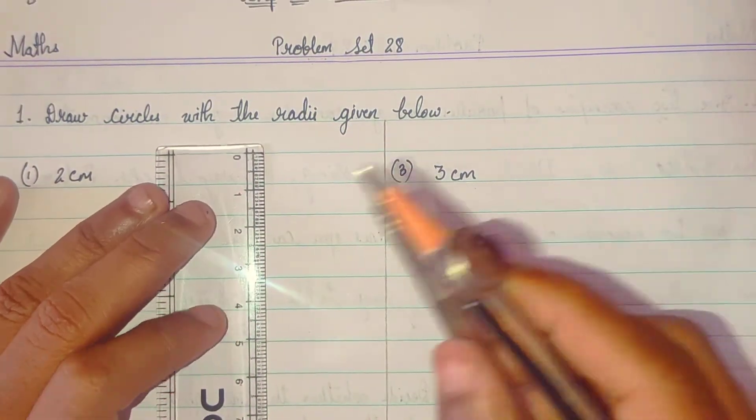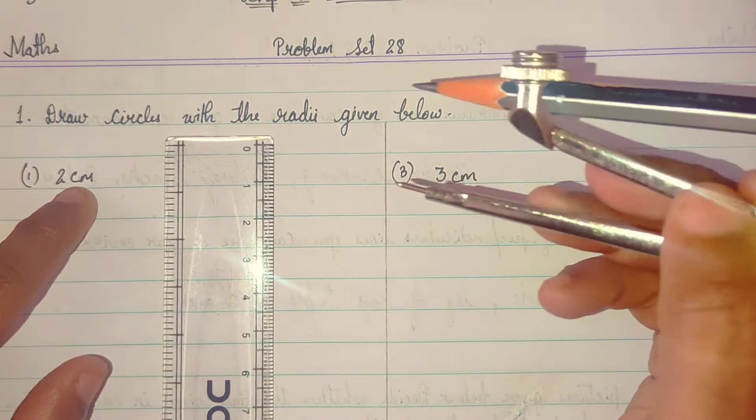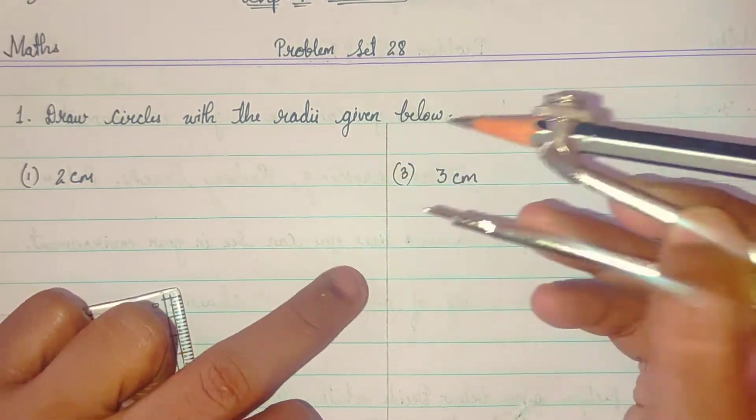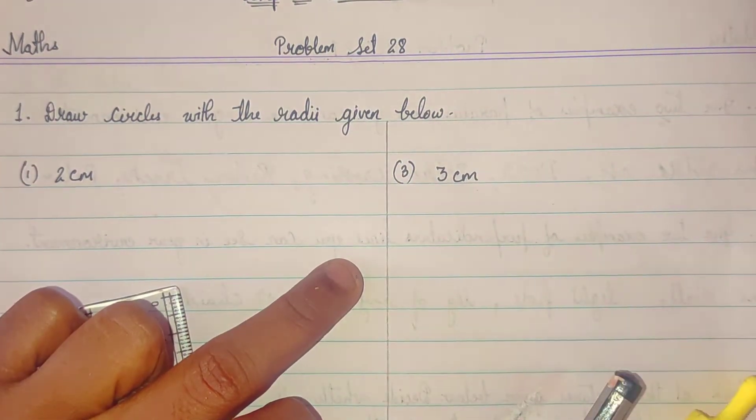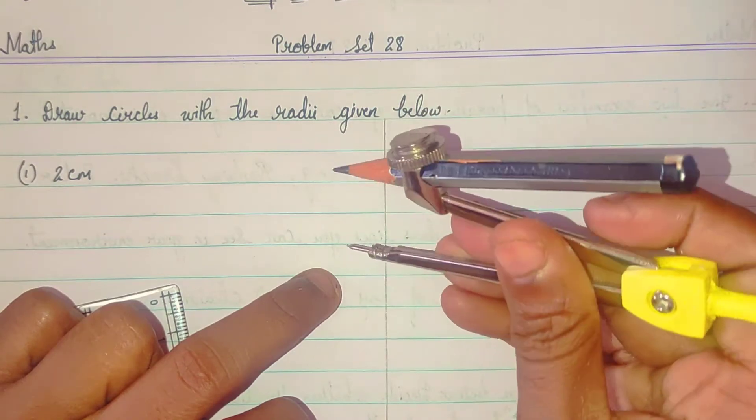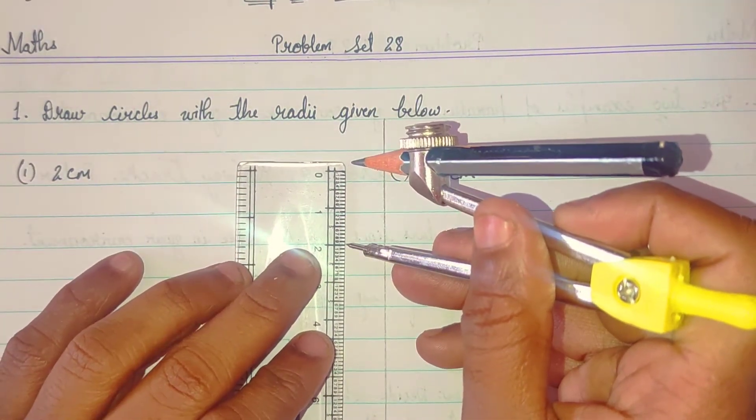Take your ruler and then take your compass. Now, 2 centimeter bolane hai na. Toh, yahan pe samjho, ek line fix kiya aap ne. And then, put one dot over there.